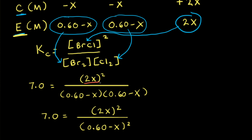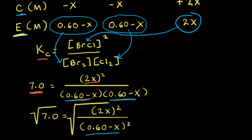Here we have our equilibrium concentrations plugged into our equilibrium constant expression, and Kc equals 7.0 for this reaction at 400 Kelvin. Our goal is to solve for x. Since 0.60 minus x times 0.60 minus x equals (0.60 minus x) squared, we can solve for x by taking the square root of both sides.